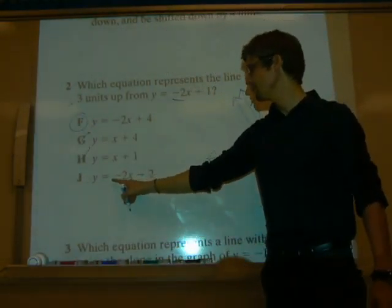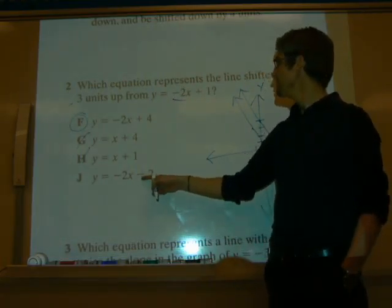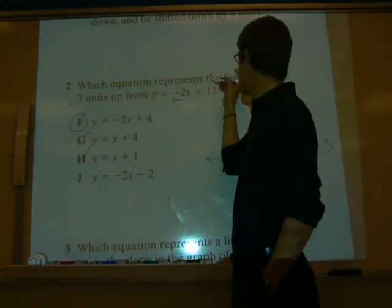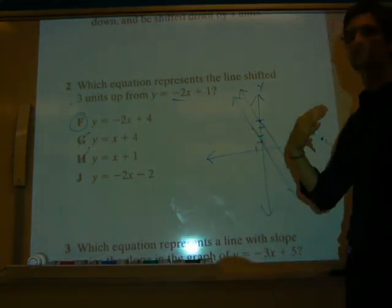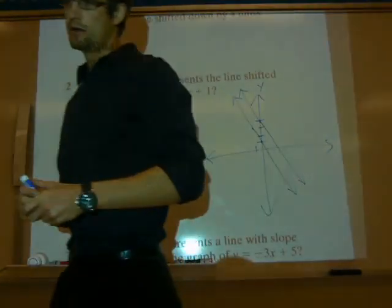What's going on here when you have y equals negative 2x minus 2? This would be shifted down 3 units. Exactly. It's going to be positive 1, 0, negative 1, negative 2. That would be shifted down. Pretty simple. Let's do this one last problem.